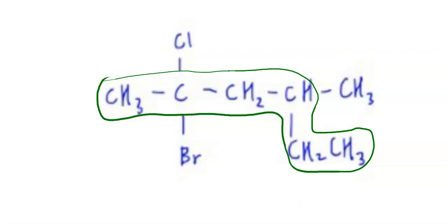If you number it in this way, see, if you number this, you say this is the carbon chain. So this contains 1, 2, 3, 4, 5 carbons.